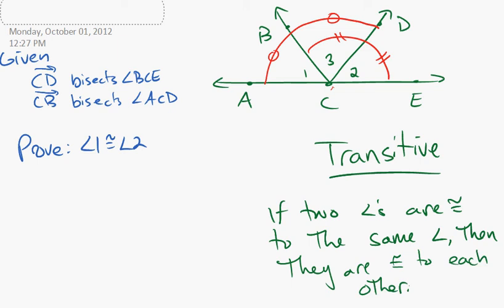So notice what you've got to prove in order to use this transitive property. You need to show that angle one is congruent to angle three, and you need to show that angle two is congruent to angle three.